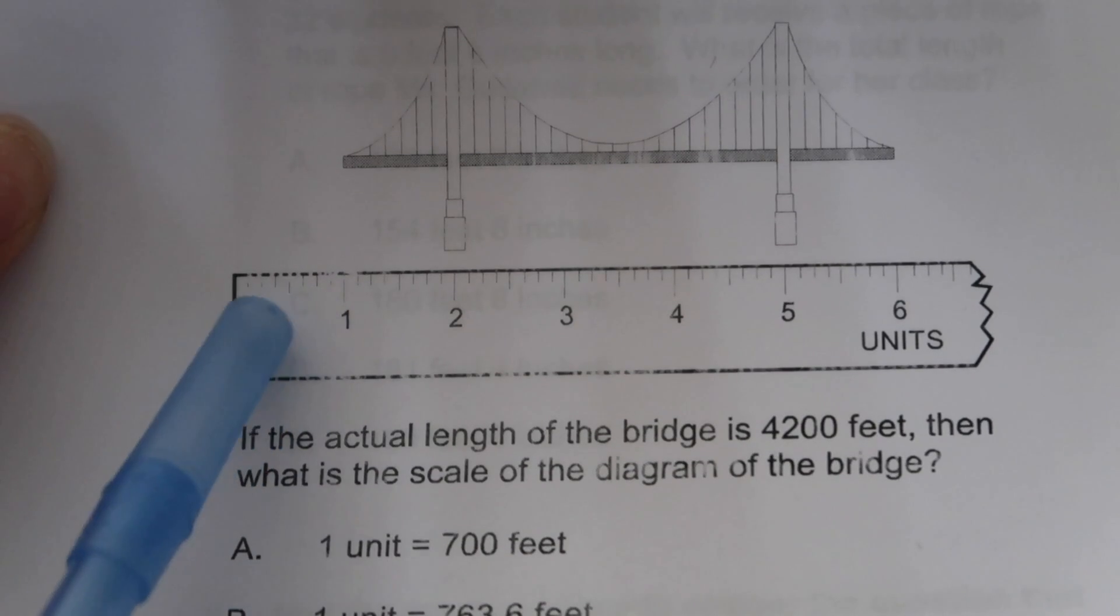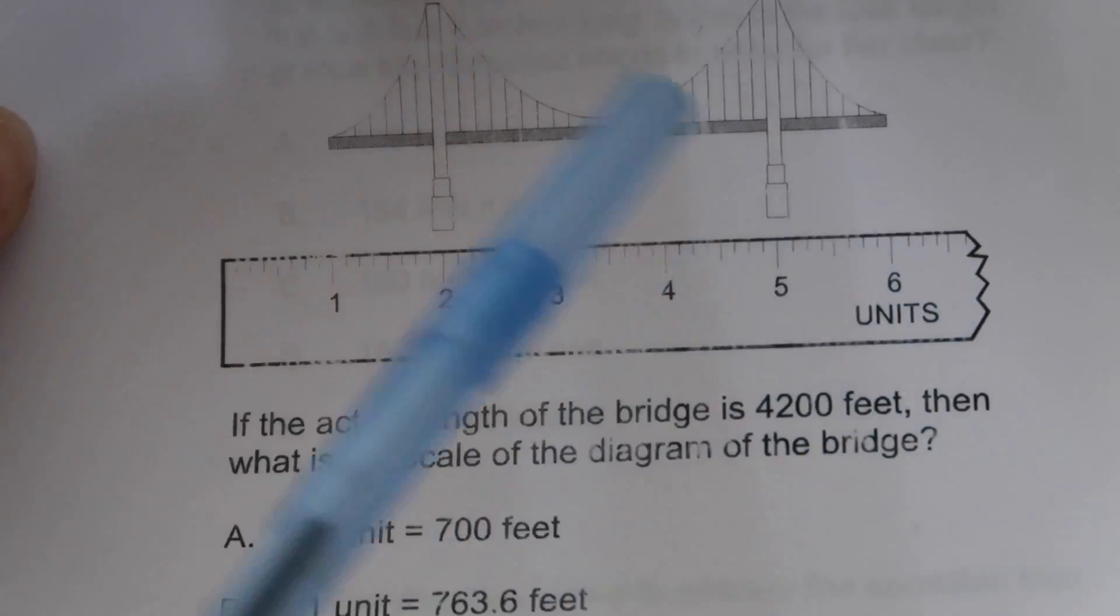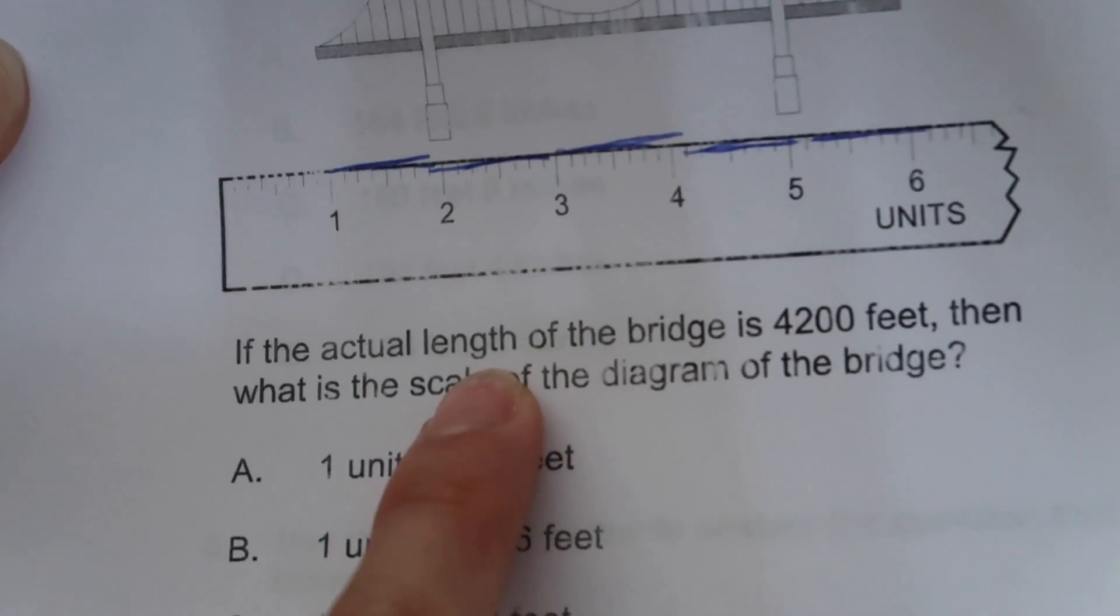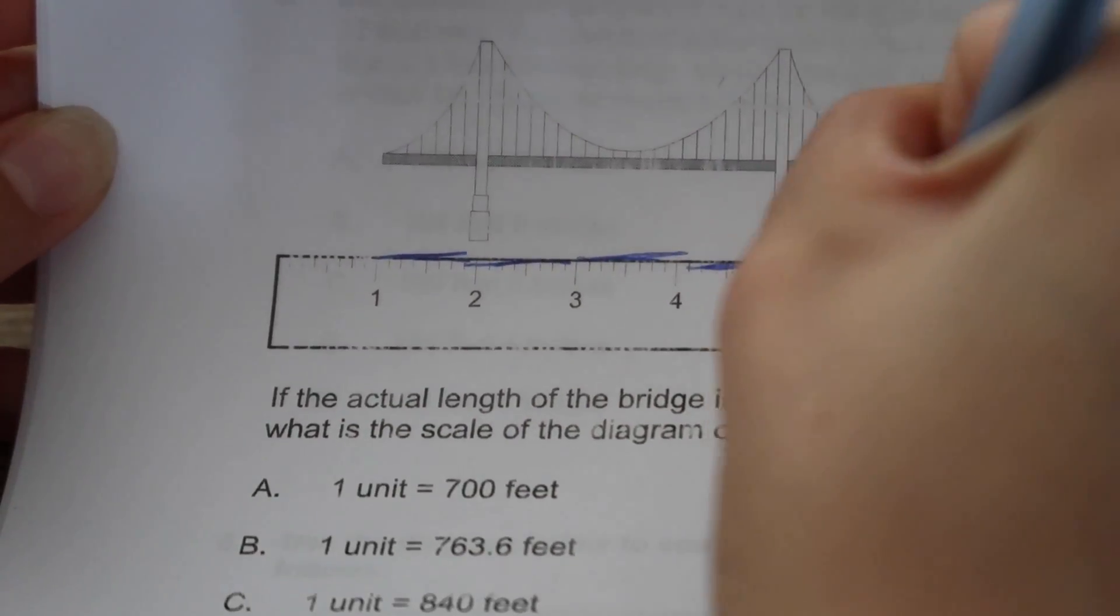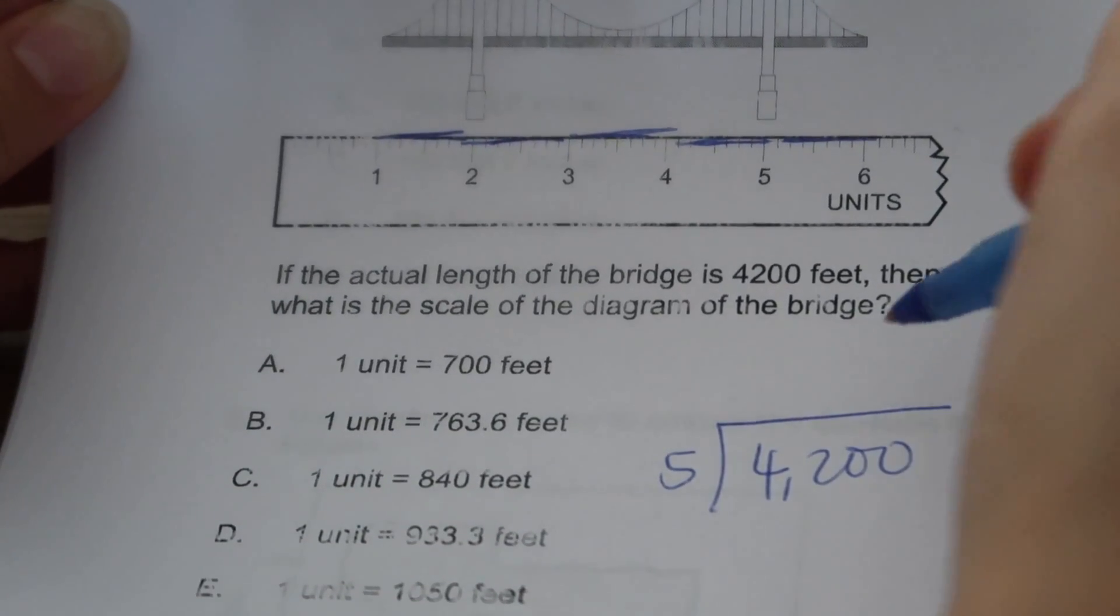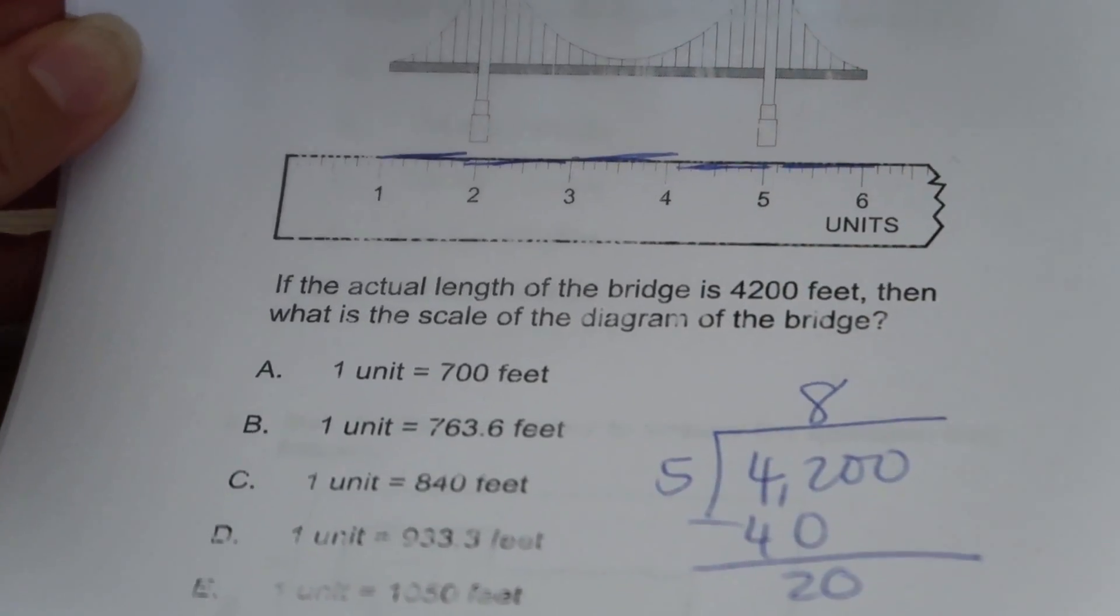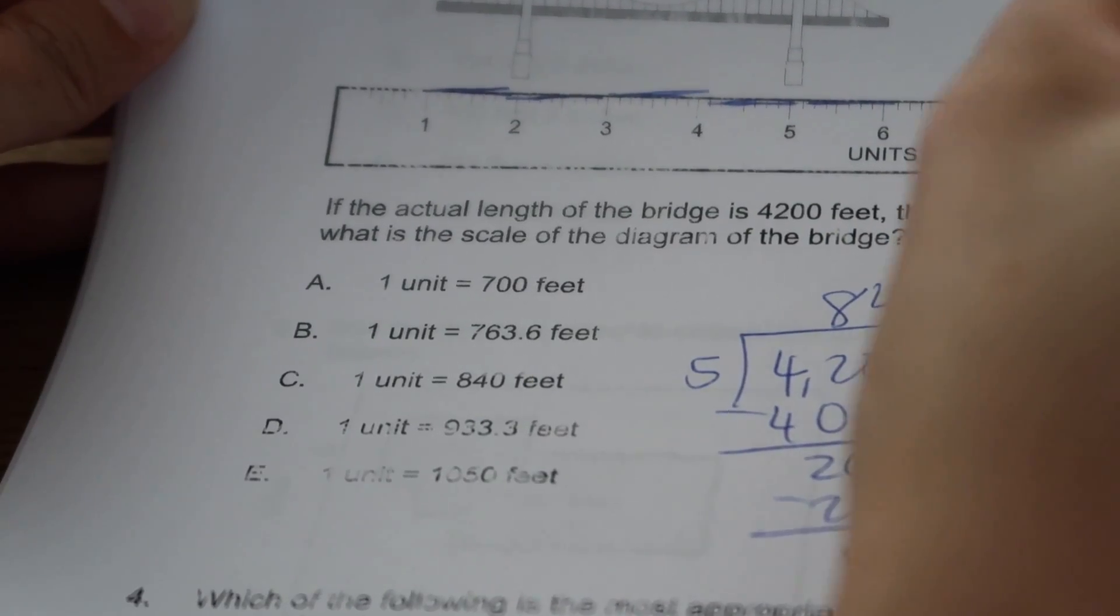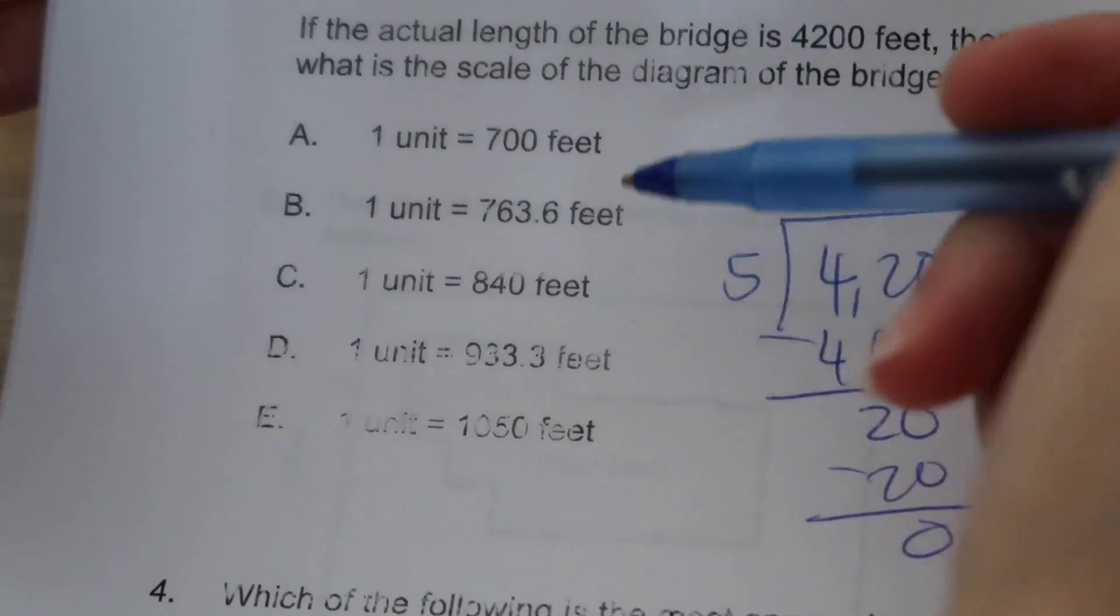They have a ruler and it's saying that the bridge is representing 4,200 feet. You notice that the bridge starts at one. Usually on a ruler, you have to start at the end. So right now we have one, two, three, four, five units. Even though it says six, they're tricking you. If the actual length of the bridge is 4,200 but here it's only five units, I'm going to divide to see what one unit equals. Divide it by five. Five goes into 42 eight times, I get 40. Five goes into 20 four times, bring down the zero, and five goes into zero zero times. So my answer is 840, so it's C.